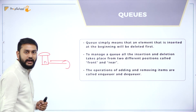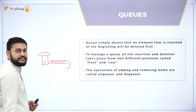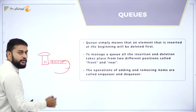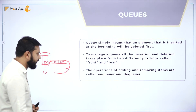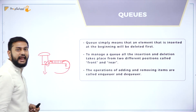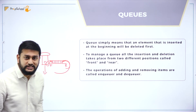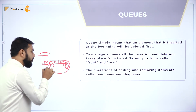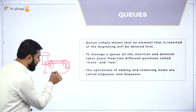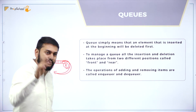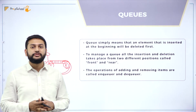You guys will enter the queue from one side and start standing from there. Everybody moves from this side toward the counter — they take the ticket and come out of the queue from the other side. So please observe: this end is what I call the rear end, and this end is what I call the front end. Insertion will happen at the rear end, but deletion will happen at the front end. That is how we perform operations in a queue.